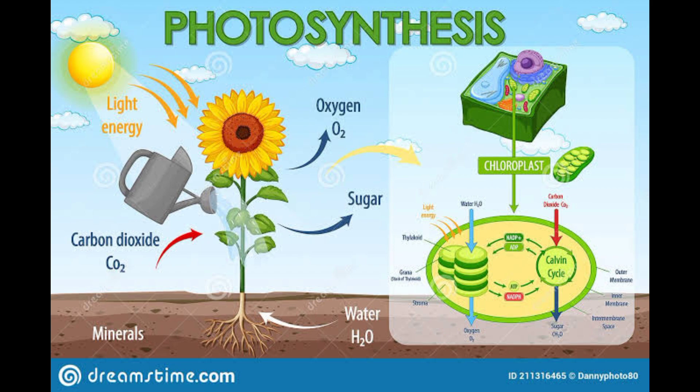The process can be summarized by the following equation: 6CO2 plus 6H2O plus light energy yields C6H12O6 plus 6O2. The process of photosynthesis occurs in chloroplasts, which are organelles found in plant cells.